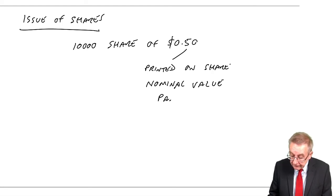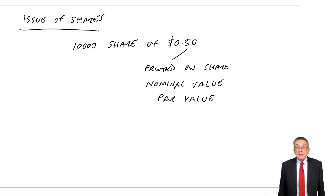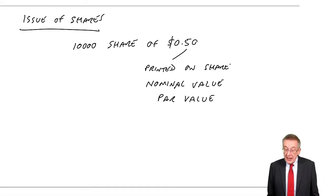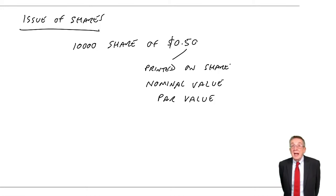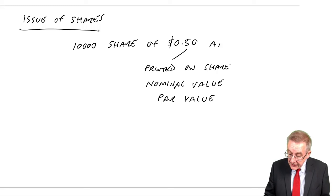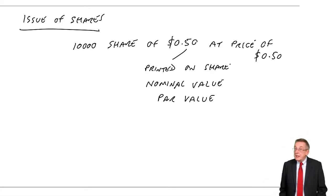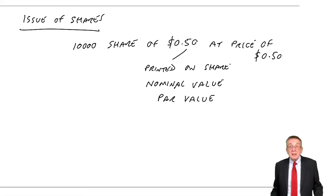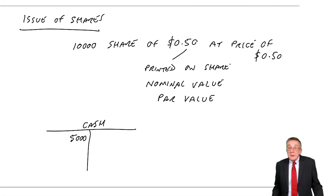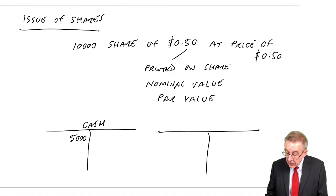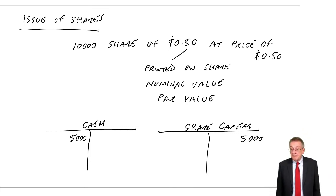If you ever see the words nominal or par value in the exam, it's the amount that's printed on the share. In this case, we issued 10,000 shares and charged 50 cents — we receive 5,000, so debit cash 5,000 and credit share capital 5,000. Just like a sole trader — absolutely no problem.